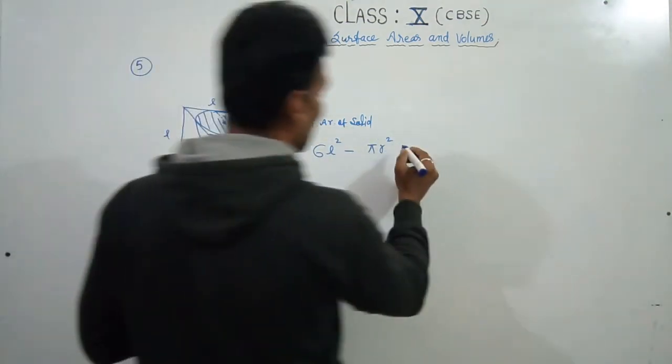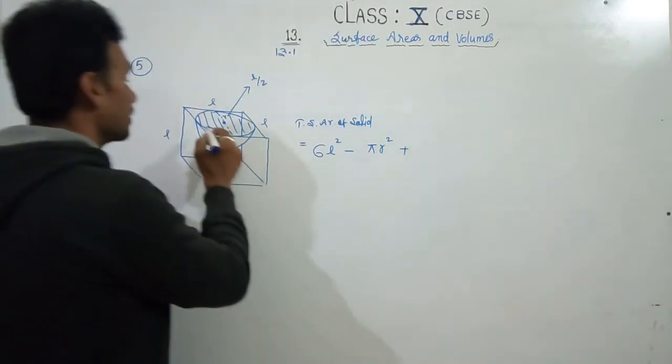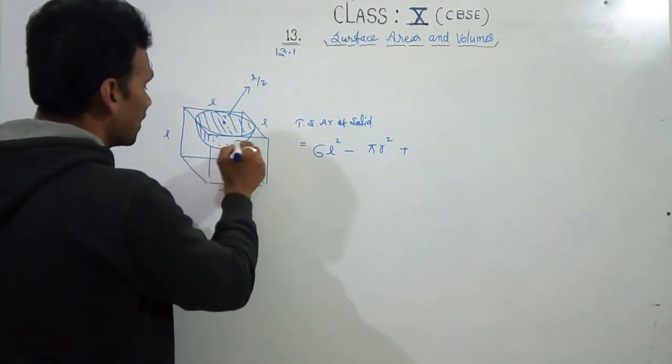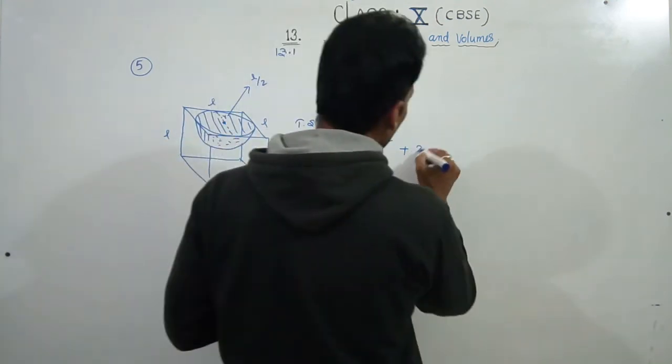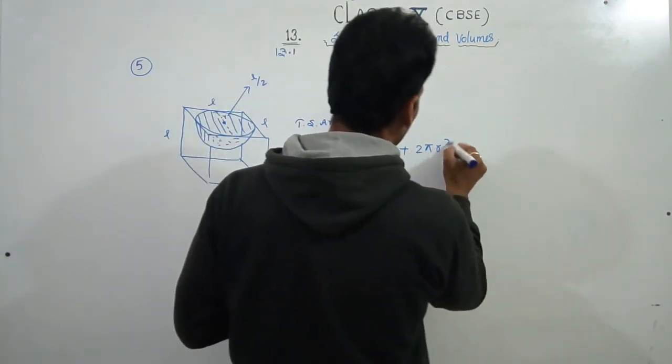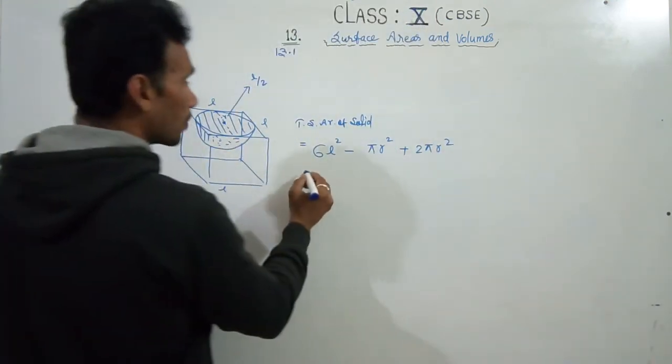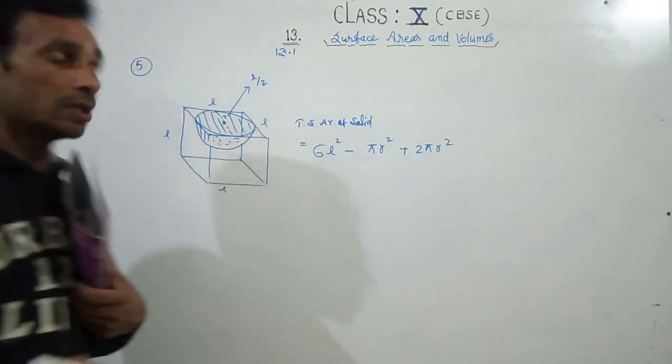πr² and πr² plus - what? Hemisphere surface area, which is this whole thing. So it's 2πr². Clear? Now we'll put the value here.